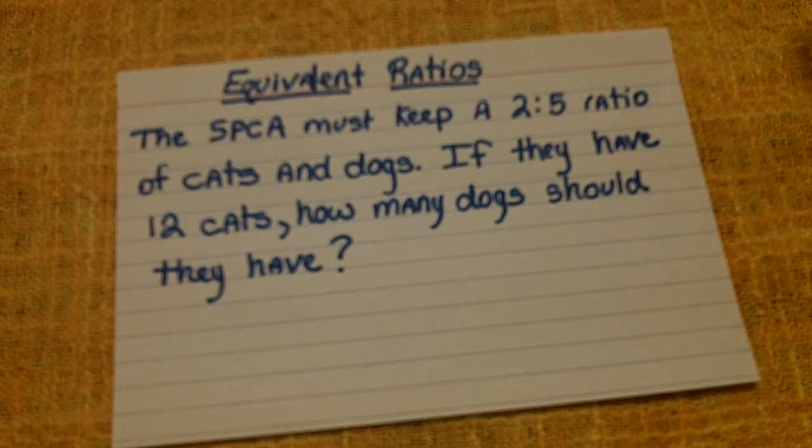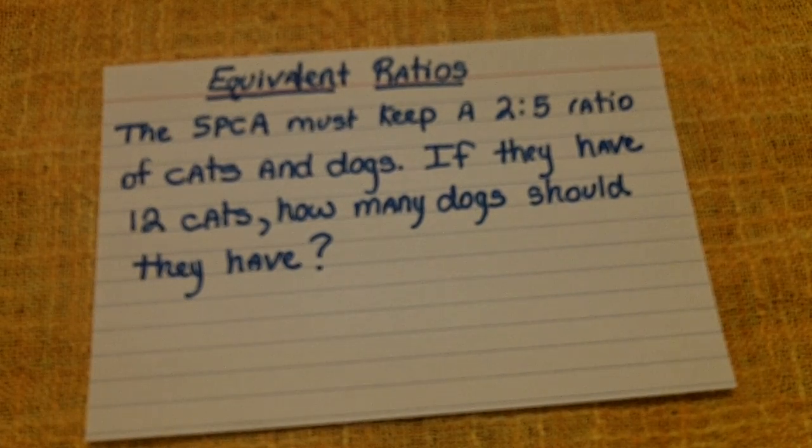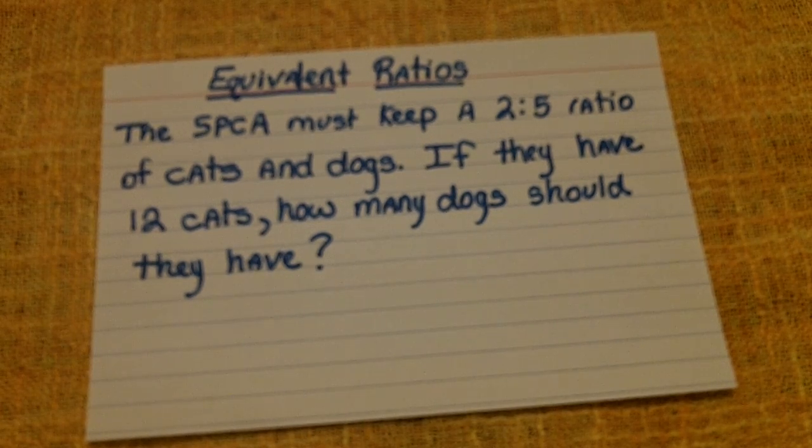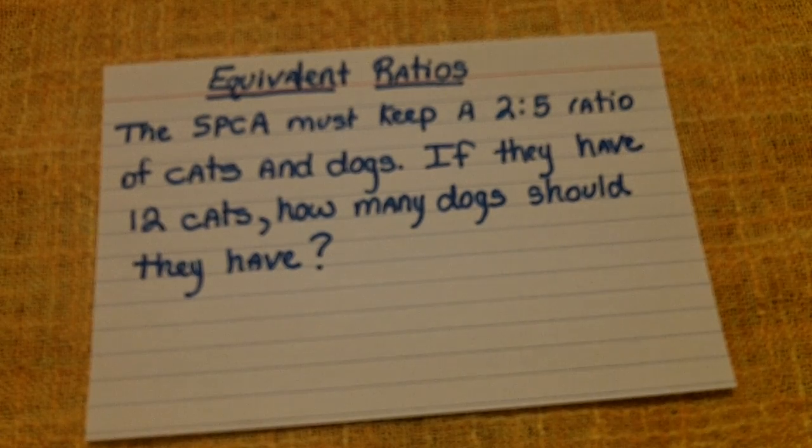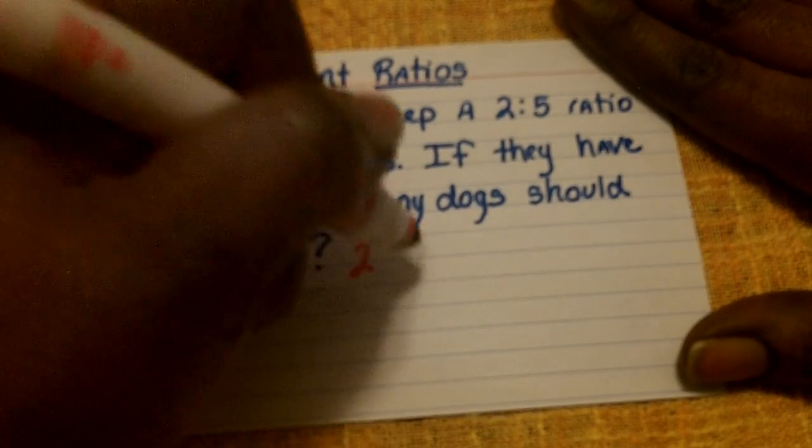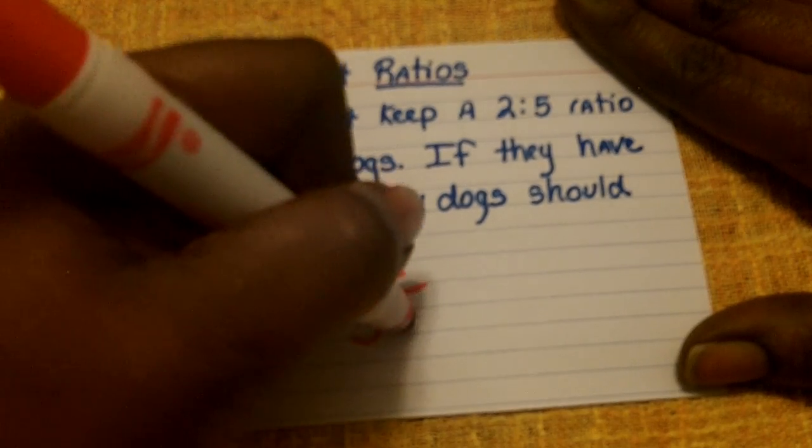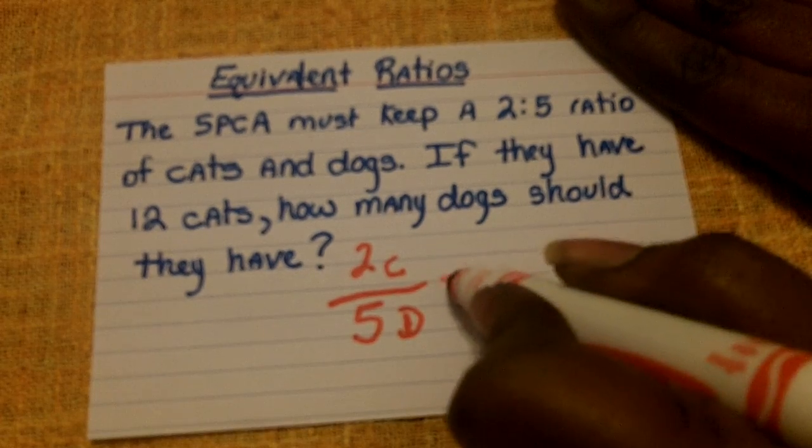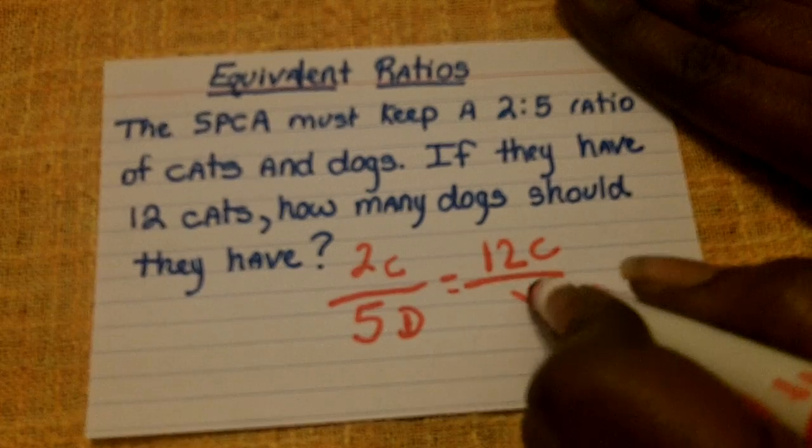Here's another example. The SPCA must keep a two to five ratio of cats and dogs. If they have twelve cats, how many dogs should they have? Well, what we have is the ratio of two cats for every five dogs. But what we're given is what if there's twelve cats? How many dogs will we have then?